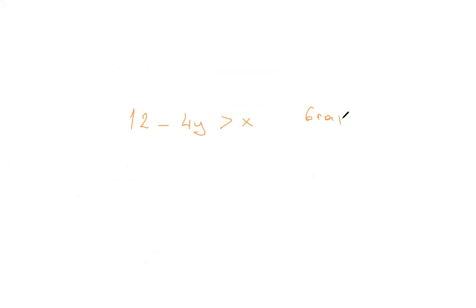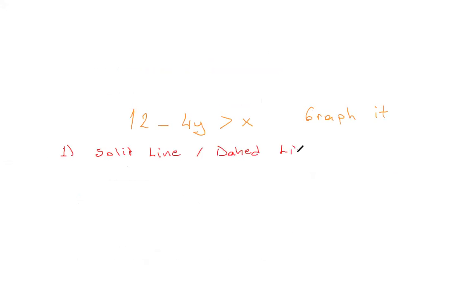Let's graph this. Dear ladies, the first part: is the boundary a solid line or a dashed line? Decide this. What do you think? Because it's not an equation, the boundary will be a dashed line. Bravo — the boundary is dashed.